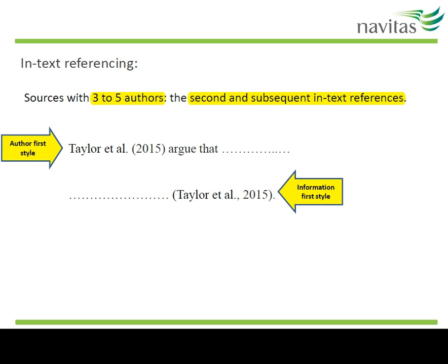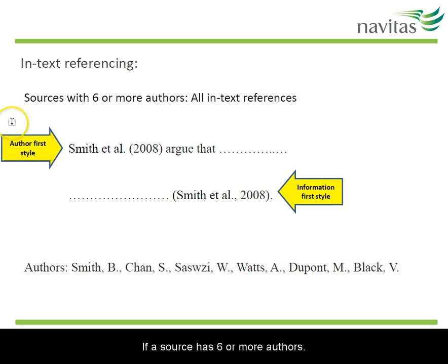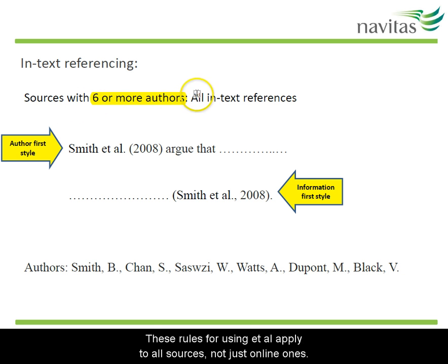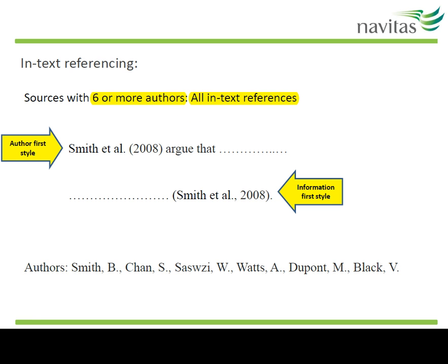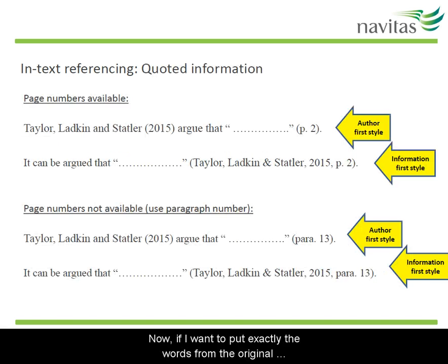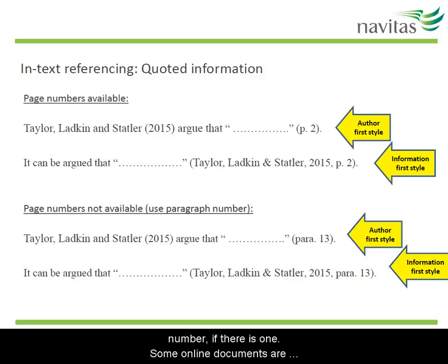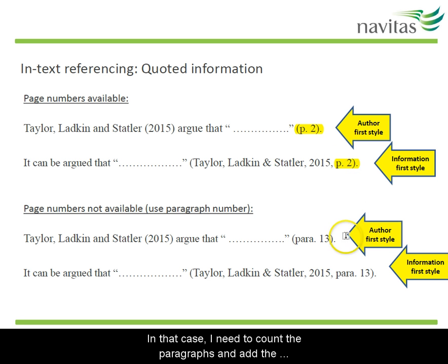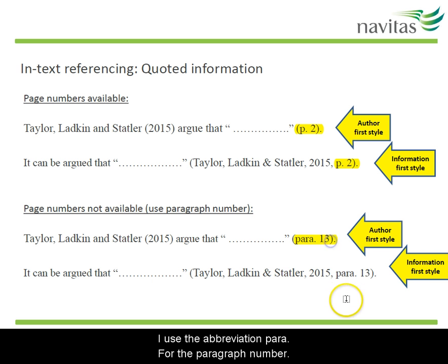Et al. means 'and the others.' If a source has six or more authors, use et al. right from the first in-text reference. These rules for using et al. apply to all sources, not just online ones. Now, if I want to put exactly the words from the original article in my assignment — a quote — I need to add a page number, if there is one. Some online documents are just a long piece of text on the same page. In that case, I need to count the paragraphs and add the paragraph number where I found the quote. I use the abbreviation para for the paragraph number.